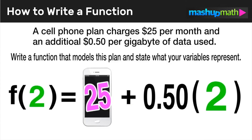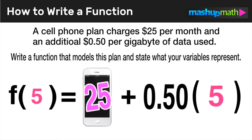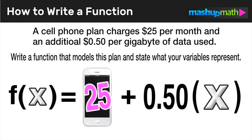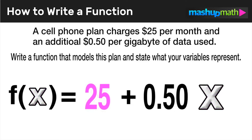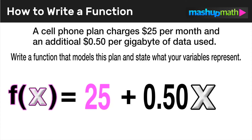This relationship will apply no matter what value we input — whether it's two gigs of data, five gigs of data, or some unknown amount. We're going to call that unknown number of gigs x. So now we have an algebraic function that models this scenario, and we can easily replace x with the number of gigs used to find out what the monthly total bill would be.